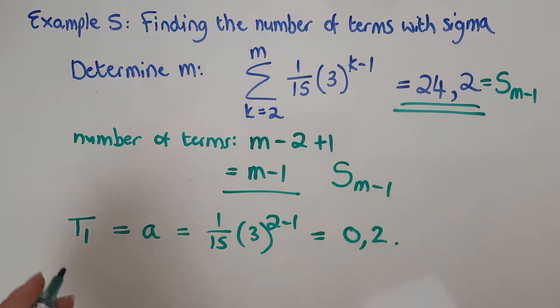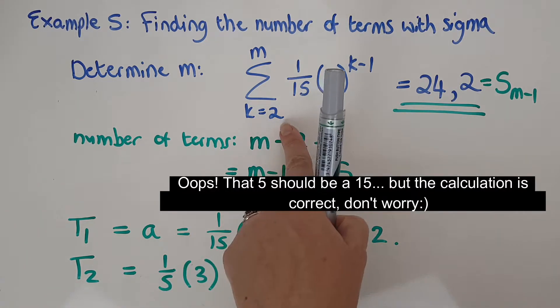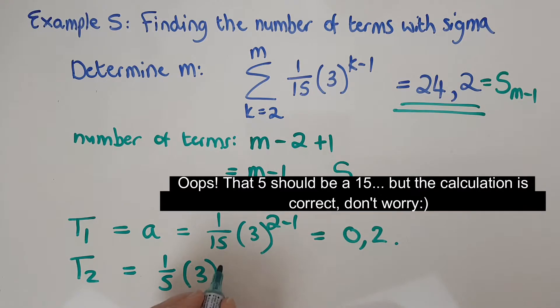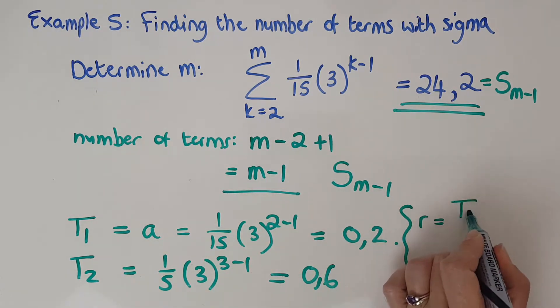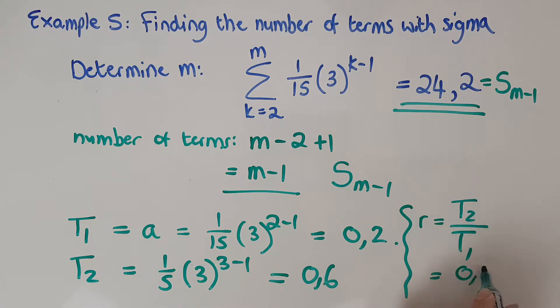I know it's geometric but we don't have r, we need to get it. t2 is going to be 1 over 15 and it's 3 and now the next one up from 2 will be 3. So it's going to be 3 minus 1. That's 0 comma 6. Once I've got those I can get the ratio. So my r is going to be t2 over t1 which is 0 comma 6 over 0 comma 2 and that gives me 3.